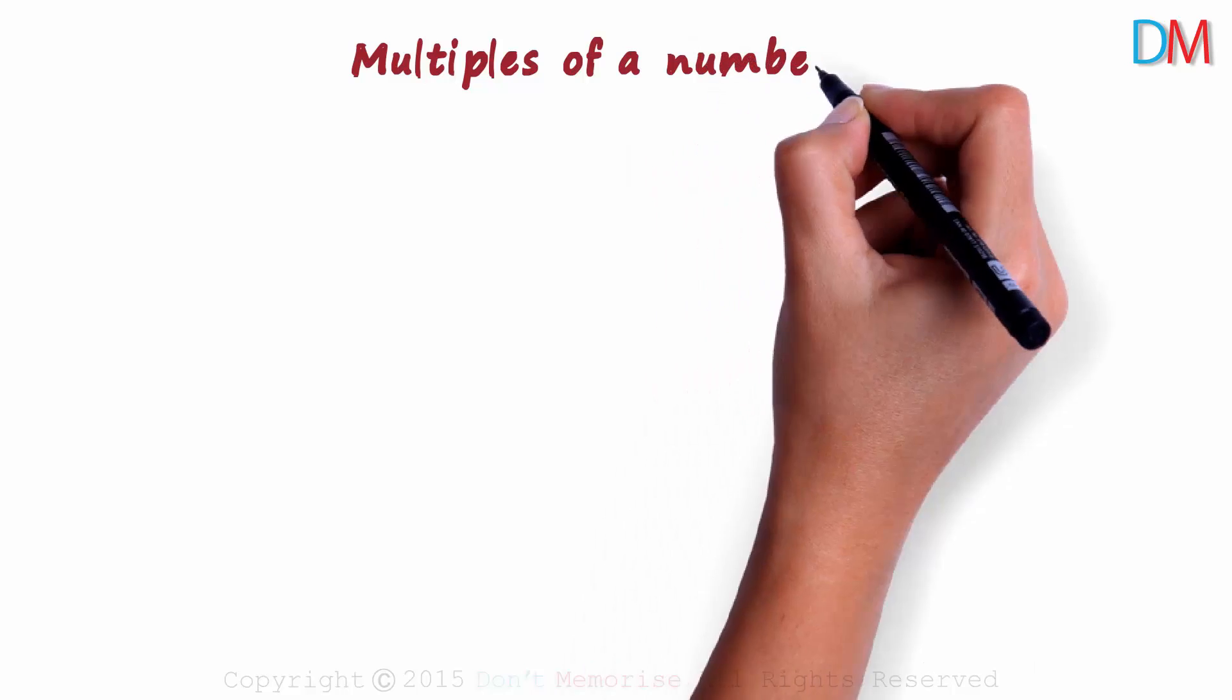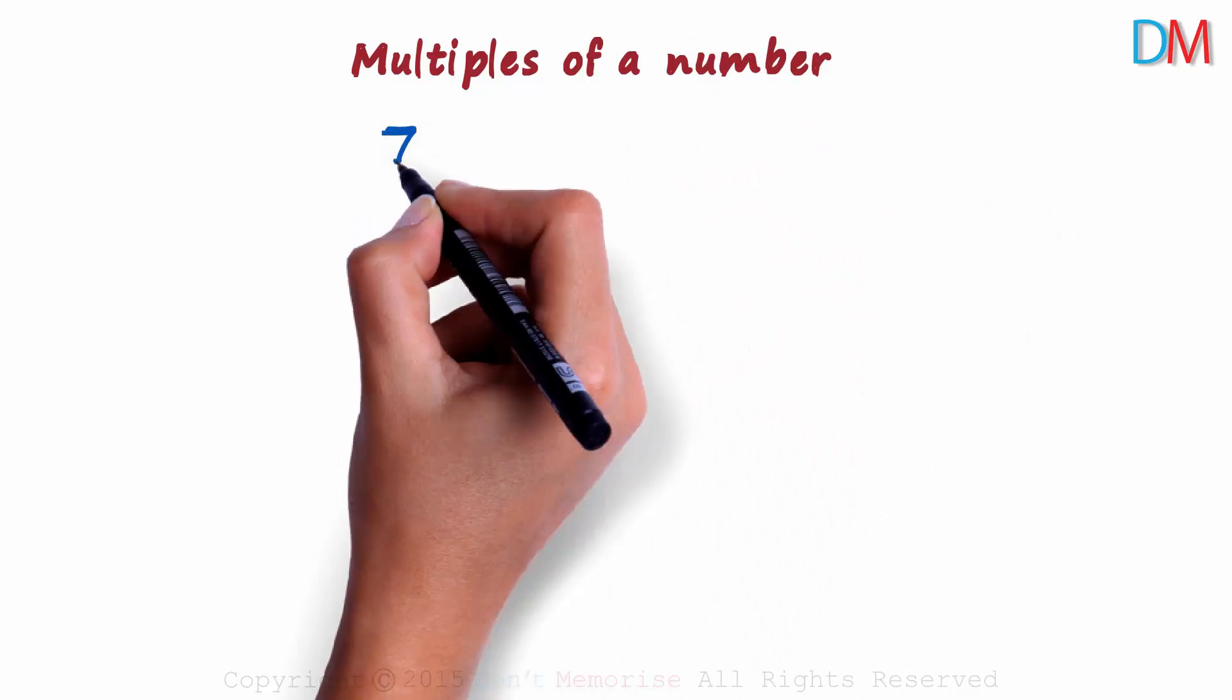What are the multiples of a number? Say we have a number 7. What are its multiples? How many multiples does it have?